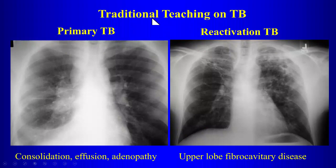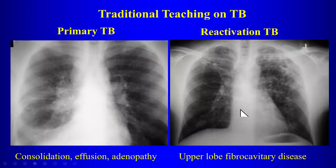The traditional teaching was that primary TB gives lymphadenopathy and reactivation TB gives fibrocavitary disease in an upper lobe distribution. But this traditional teaching is not correct. What determines the radiographic appearance is the immunocompetence of the patient, regardless of when the infection occurred.